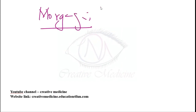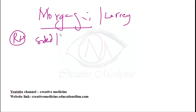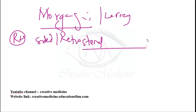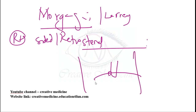Morgagni hernia, also called Larrey's hernia, is a right-sided or retrosternal hernia. It is present between the right xiphoid process and the central tendon of the diaphragm — a space called the space of Larrey, through which the superior epigastric vessels pass.